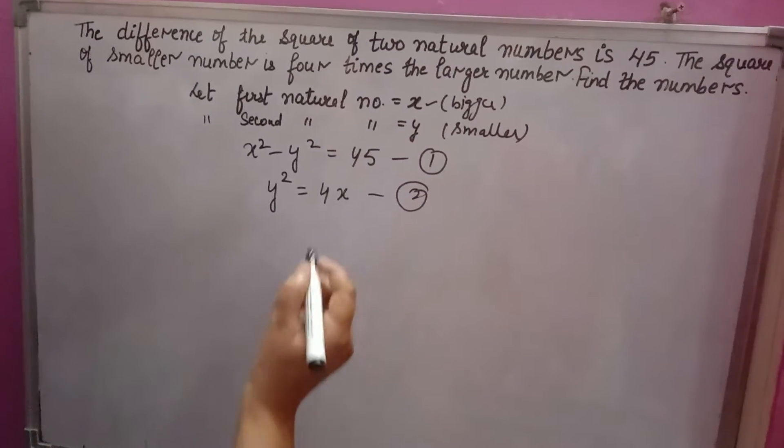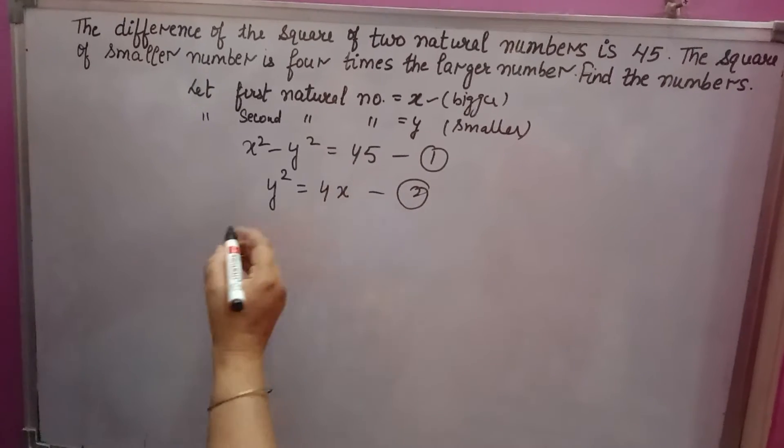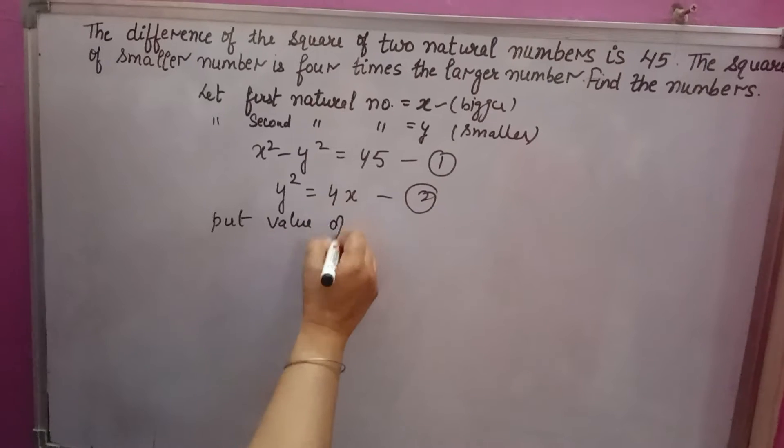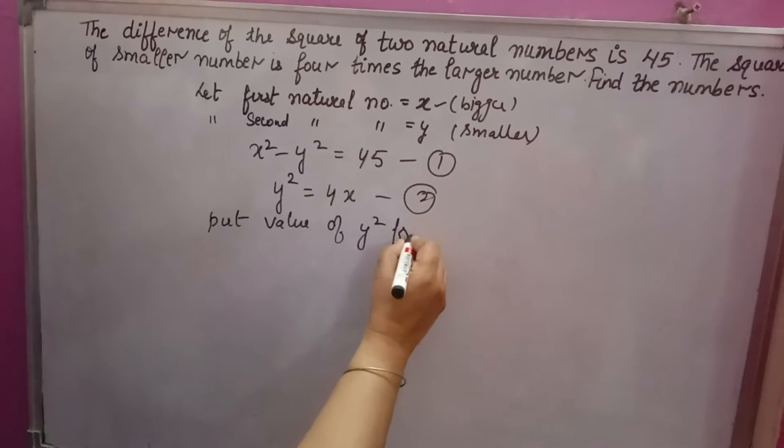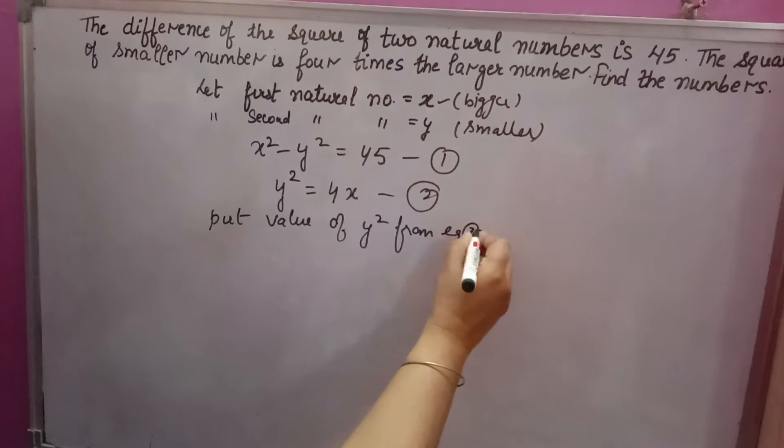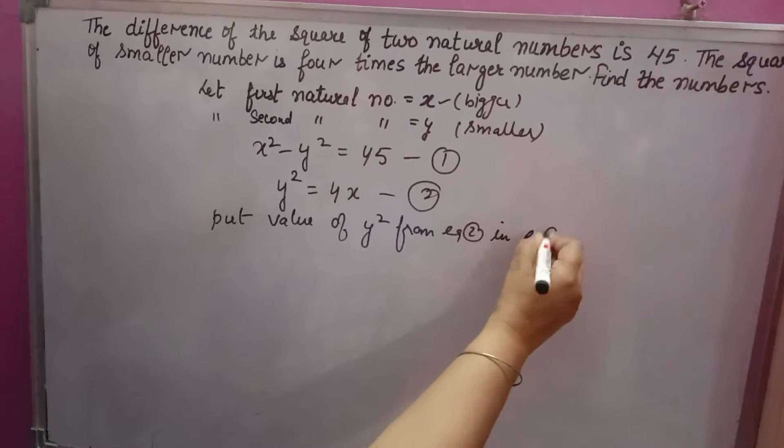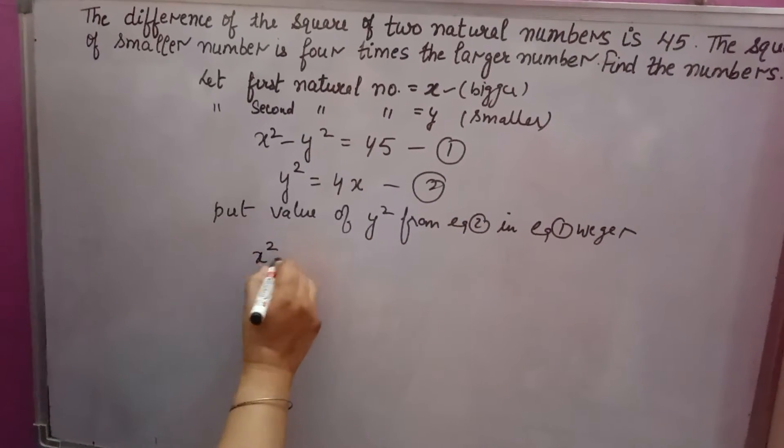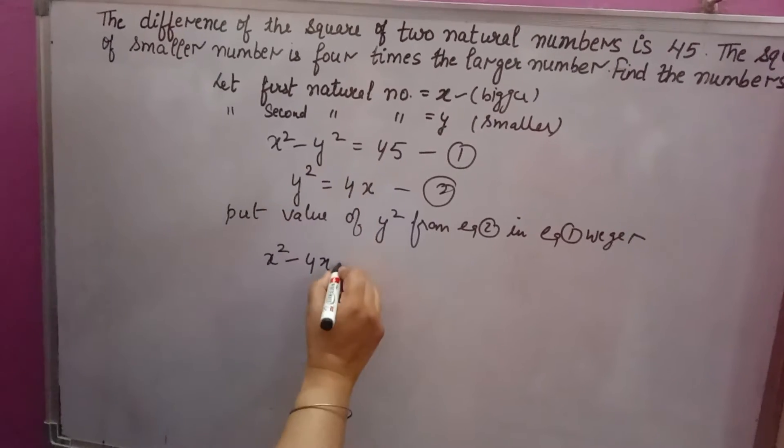Find the numbers. You have to find both numbers, bigger number and smaller number. Now put value of y square from equation 2 in equation 1. We get x square minus 4x, y square equal to 45. Bring 45 this side.